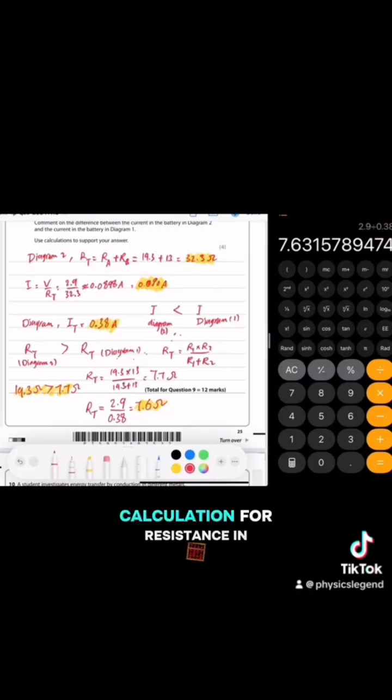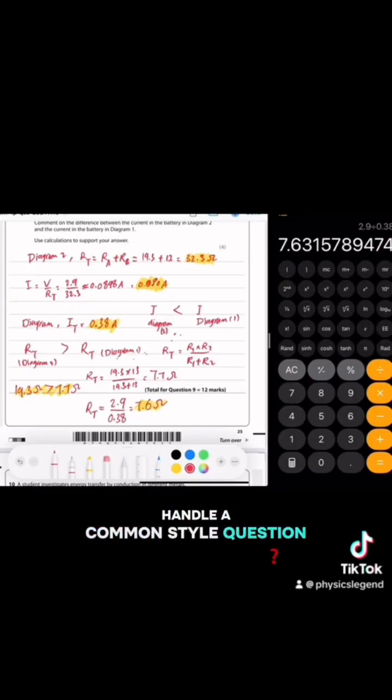So let me count how many marks I get here. I already mentioned the calculation for resistance in diagram 2, and I calculated resistance is larger in diagram 2, and I calculated the current in diagram 2, and the conclusion - the current is smaller in diagram 2. And that's how you handle a comparison style question with calm and clear thinking and solid calculation.